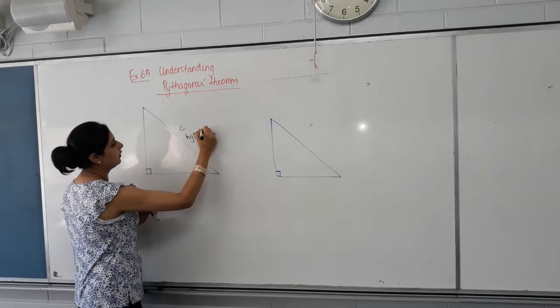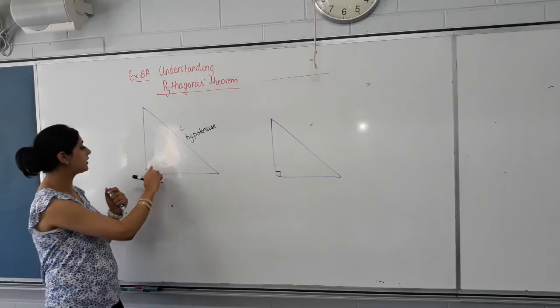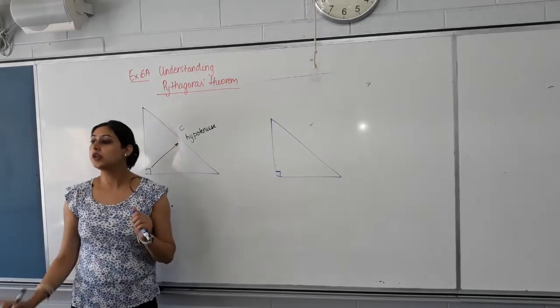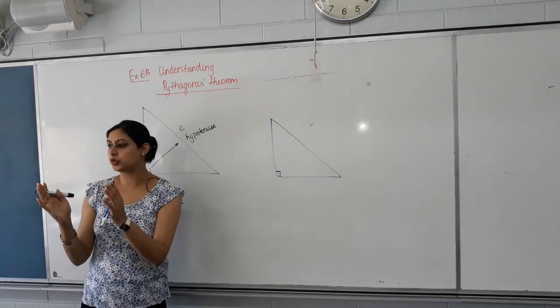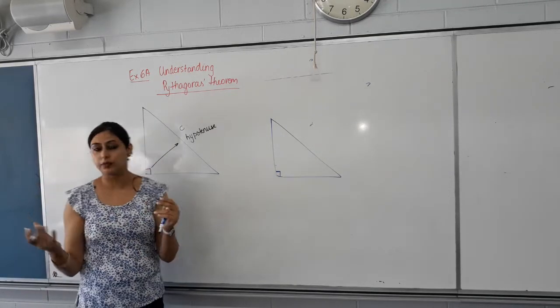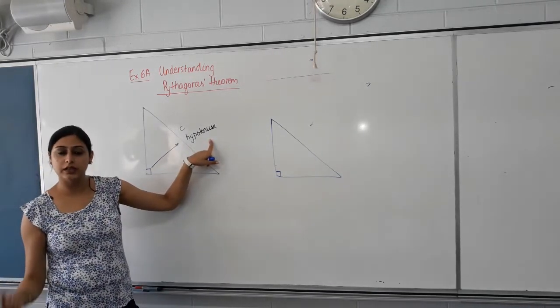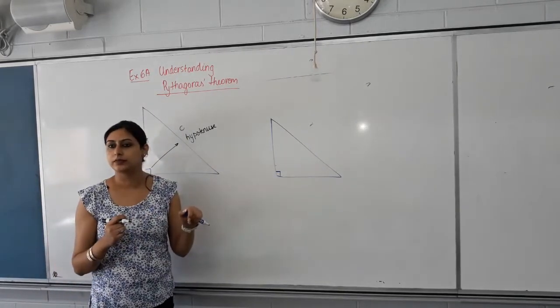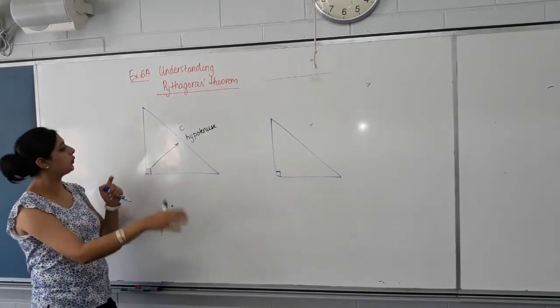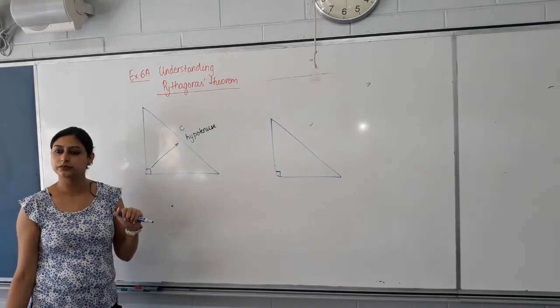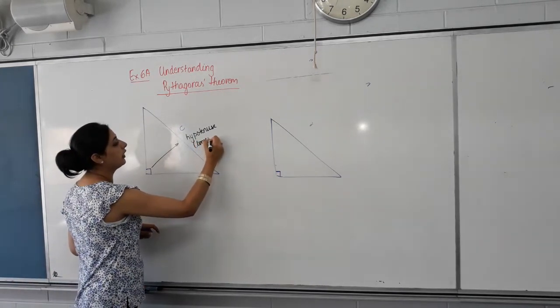Hypotenuse, yes. So this side is always called the hypotenuse. And how do you find hypotenuse? It's the side opposite to the right angle. So in a right angle triangle, once you know, okay, I have a right angle triangle, I have an unknown side, I can use Pythagoras' theorem. The first thing you locate is which side is the hypotenuse. Do you know there's a special feature that hypotenuse has? Can you look and tell me which one do you think is the longest side in this triangle? Hypotenuse. So hypotenuse is the longest side in a right angle triangle.